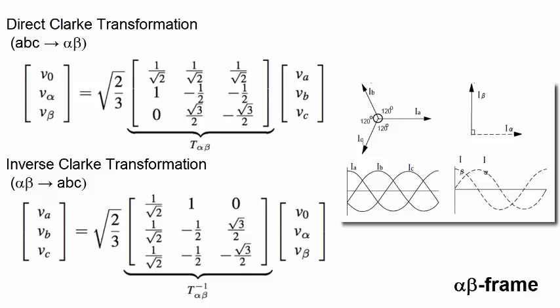The third component shown here, V0, is related to the zero-sequence component of voltage, which will exist only if the sum of VA, VB, and VC does not equal zero.